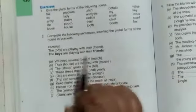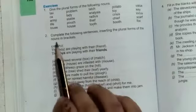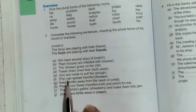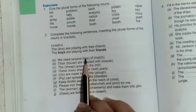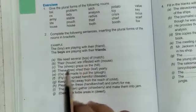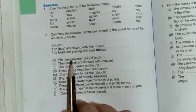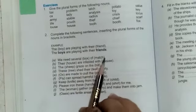After this we have the second exercise: complete the following sentences inserting the plural forms of the nouns in brackets. Now in all these statements we are provided the nouns in the brackets and we have to make the plural form of these nouns. First one is done over here, so first statement is we need several boxes of matches.